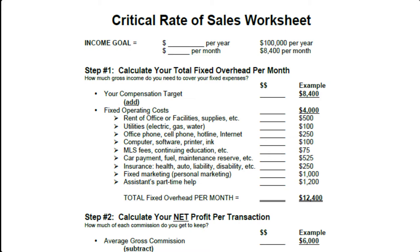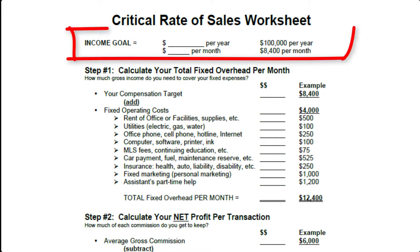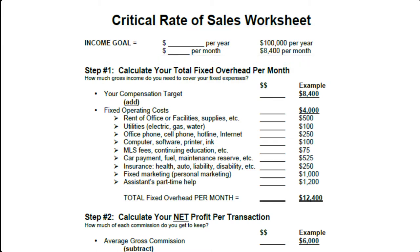And then how many transaction sides you need in a given year to reach your income goals. So let's walk through this one-pager real quickly. At the top you can see that you put in your income goal for the year and then figure out what that is per month, and then you go to step one.